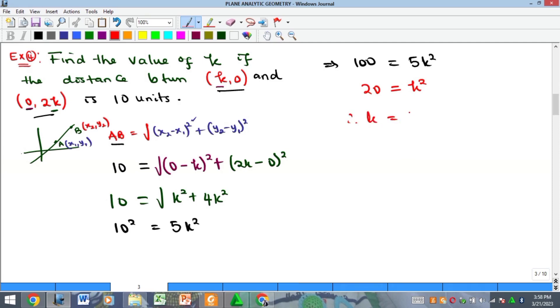And then at this time, our k alone is going to be the plus or minus square root of 20. So it's going to be either positive square root of 20 or negative square root of 20, and that is the solution to this problem.